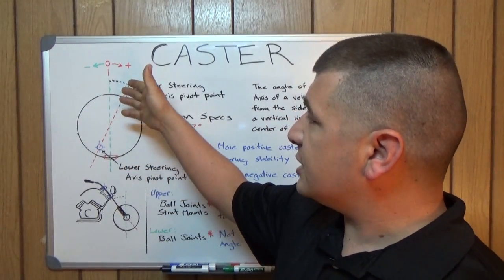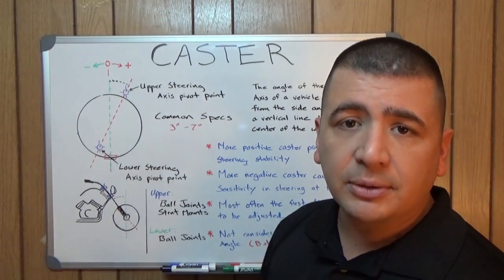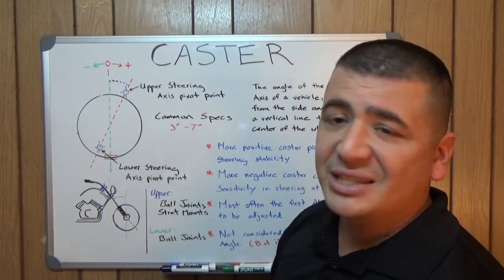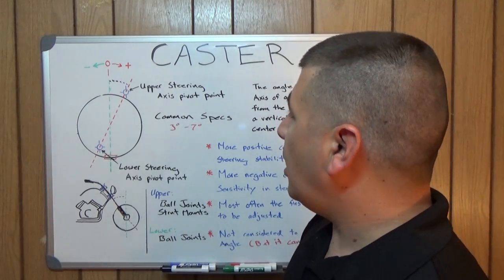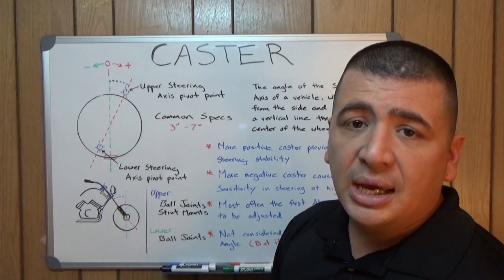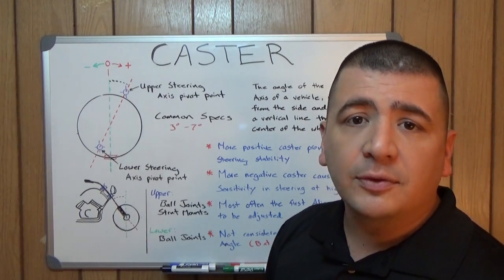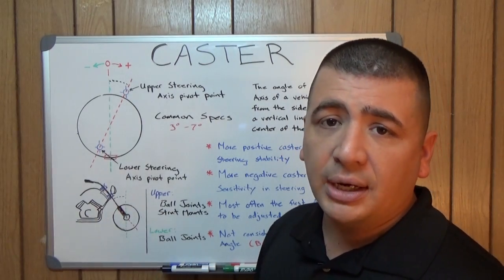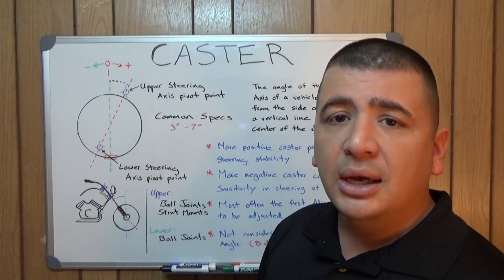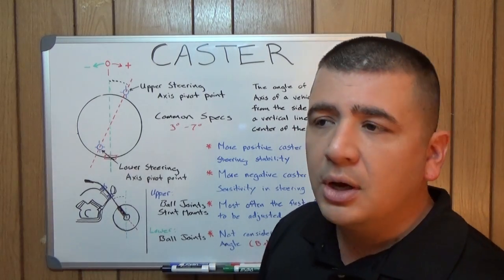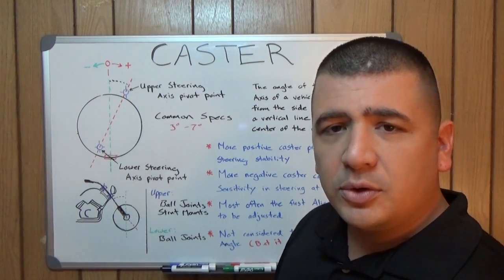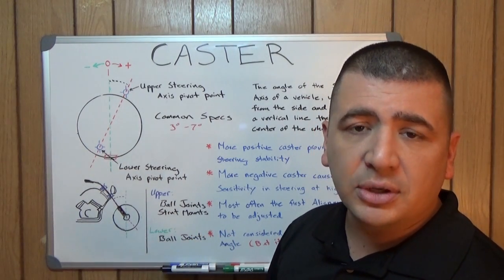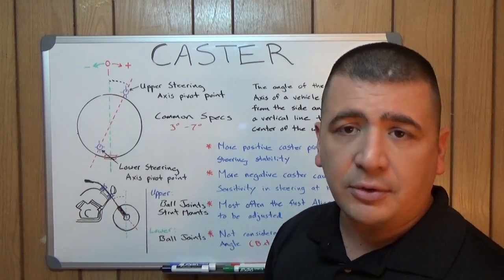Now caster is measured positive and negative. When the top of the steering axis is tilted back, that's positive caster. And when it's leaned forward towards the front of the vehicle, that's negative caster. Positive caster helps with steering stability and helps give a self-centering effect to the steering geometry, meaning that it will want to stay in a straight line when you're driving down the highway.